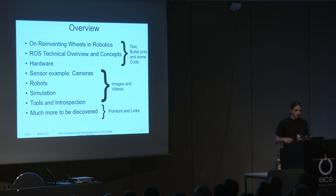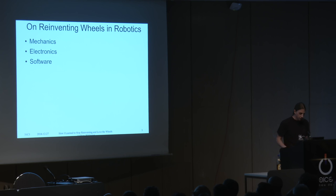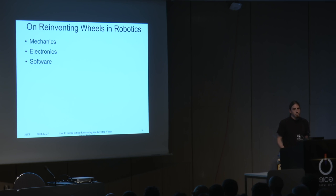First some text, then some images and funny videos, and at the end some hyperlinks. If you do robotics, what are you actually doing? Robots mainly consist of three parts: some mechanical parts, some electrical parts, and software. Today I'm only going to talk about software. There are also many interesting projects on how you can build modular reusable hardware, but today it's about software.